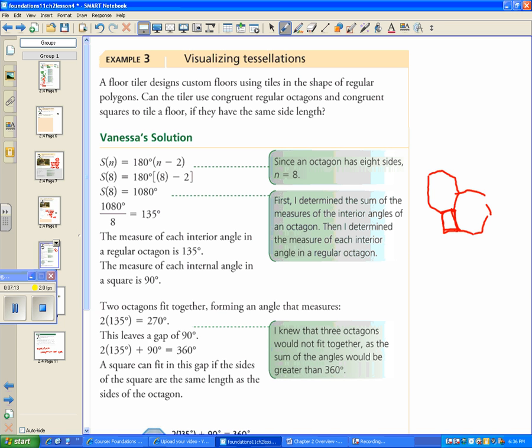This is how Vanessa attacked this problem. She said an octagon has eight sides, so the total interior angle is 1,080. And she divided by eight, so each octagon has an angle of 135 degrees. The measure of the interior angle is 135.